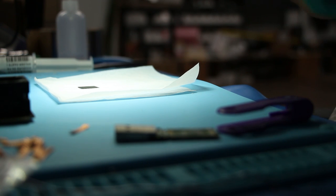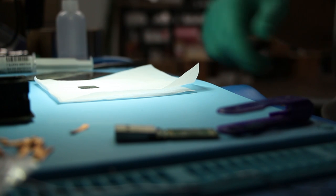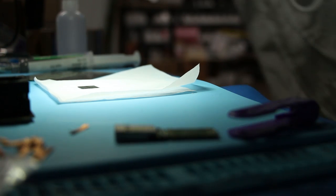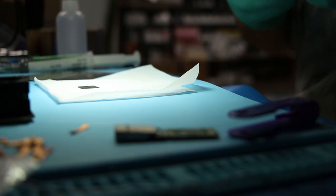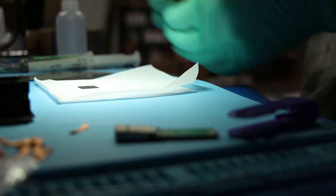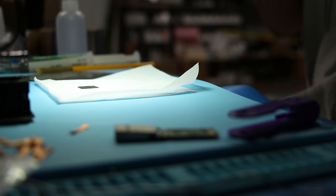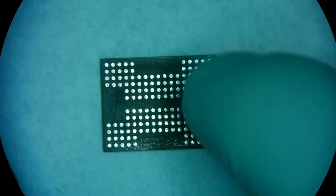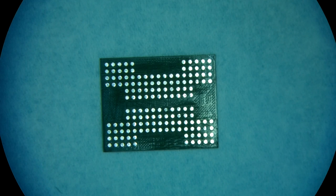All right, so we're going to need to use a couple of things here. Number one, we'll need a stencil. Number two, we'll need paste. Number three, we'll need another napkin. And number four, we'll need this knife. So, start the fume extraction. What do we need to do here? We need to reball this component, and all of these pads need to have little tiny solder balls underneath them.